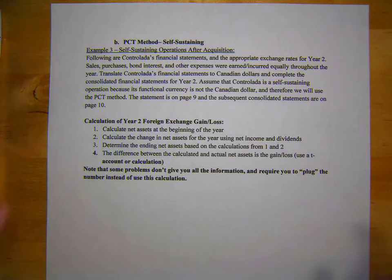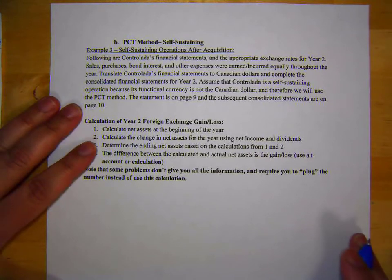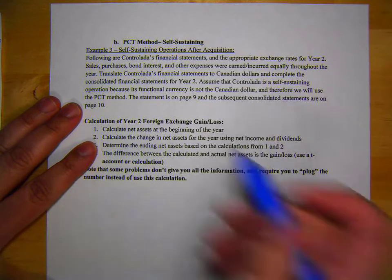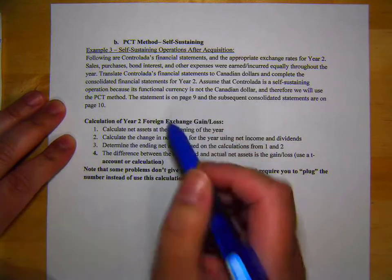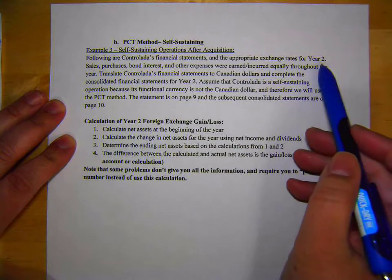Example three. The following are Contralatus financial statements. The appropriate exchange rates for year two are given. Sales, purchases, bond interest, and other expenses were earned and incurred equally during the year.